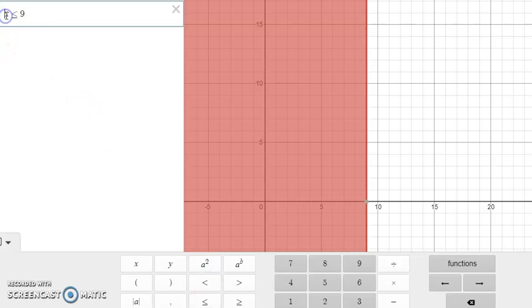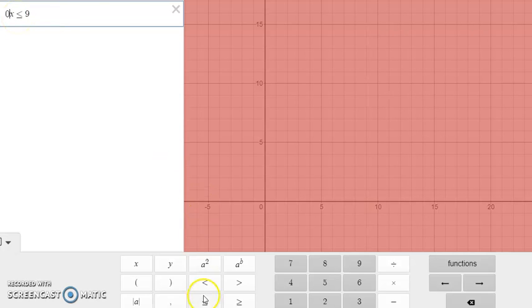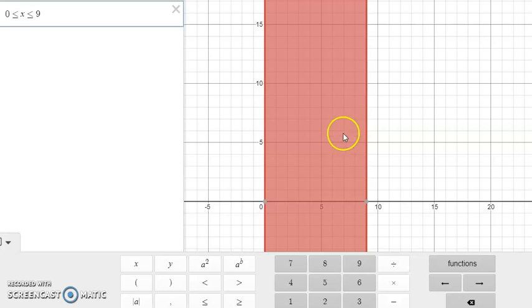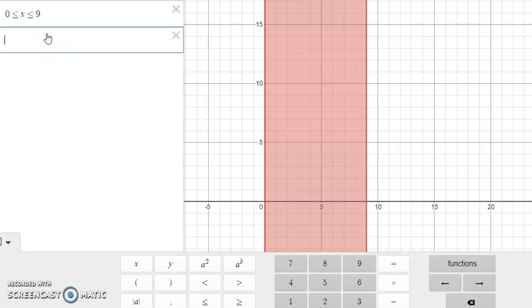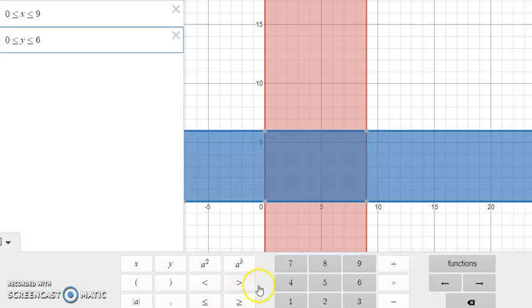So we'll just put x less than or equal to 9, representing 9 million. But remember, we don't want to go underneath 0. So if I put a 0 in front here, less than or equal to, that'll just allow me to go from 0 to 9, which is exactly what we want. And the same with y.